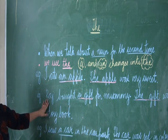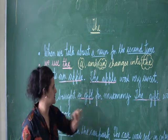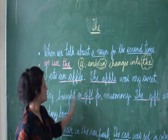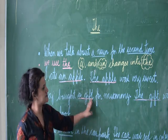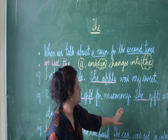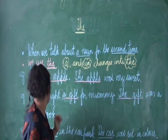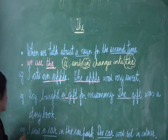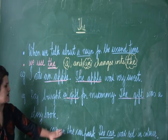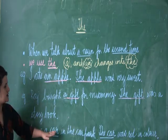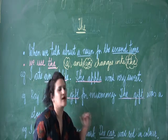Now let's look at the second example: Raj bought a gift for mummy. 'A gift' changes into 'the gift'. Same way, look at the next example: I saw a car in the car park. 'A car' changes into 'the car'.